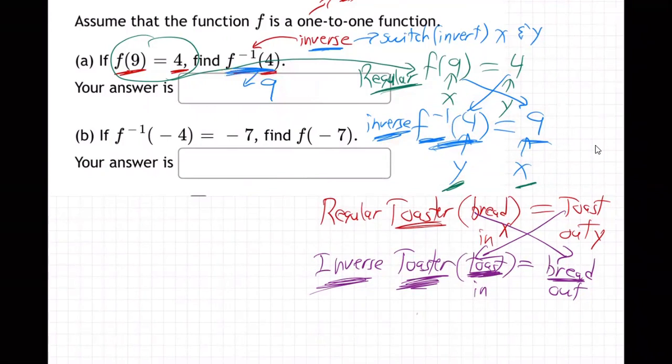Now, how about this next one? Let's look at this next part here. Right here, they're saying f inverse, notice the minus one there, of minus four equals minus seven. Now let's be clear. That means this is a y and this is an x. Why? Because the inverse function, it's reverse. So you put in the y, get out the x, right?